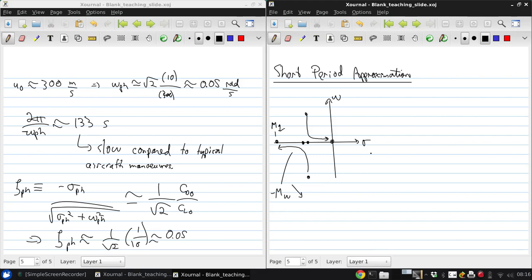So we assume for this mode that the pitch motions are too fast for the aircraft to respond to. So travel is in a straight line at a fixed speed with time-varying angle of attack. So this means that delta U is zero and delta W is U naught delta theta.